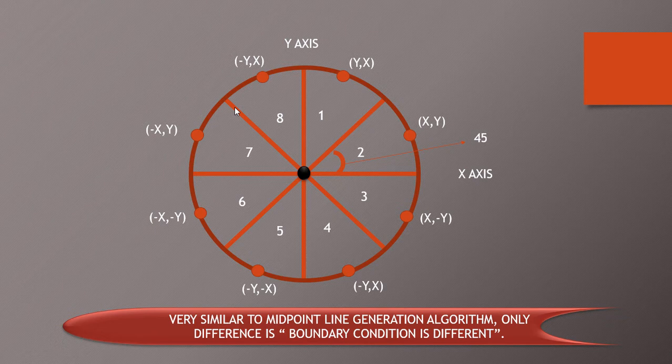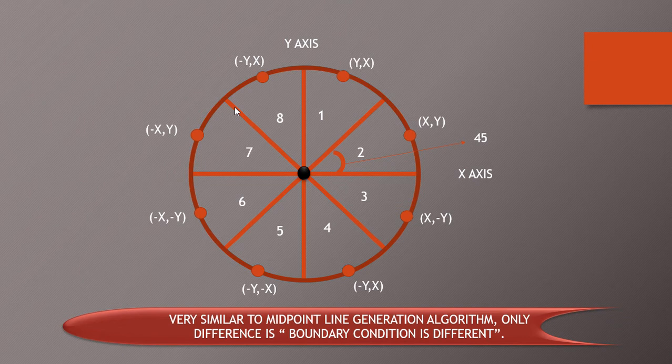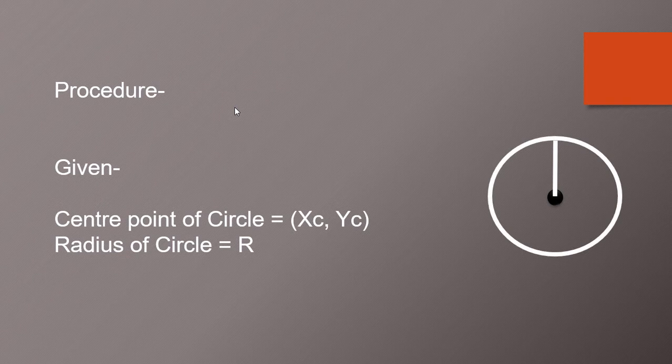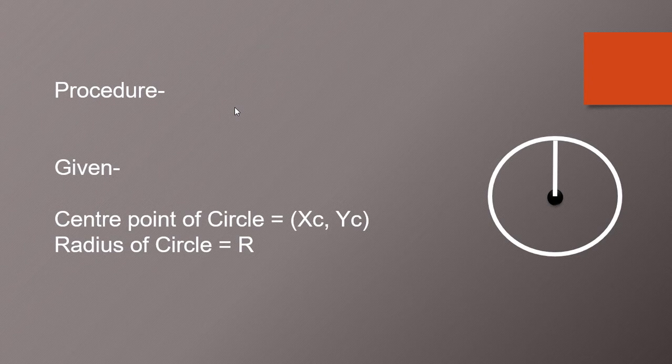Now this is the midpoint circle drawing algorithm which is very similar to our line generation algorithm. Only the difference is boundary condition is different. In the procedure, in the given part we are having center of that circle XC and YC and which is also having radius of that circle.